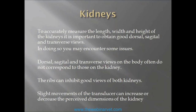Obtaining the width and height of the kidneys requires good dorsal, sagittal, and transverse views. The problem is that the dorsal, sagittal, and transverse views on the body do not often correspond to those on the kidneys. The ribs can inhibit good views of both kidneys, and very slight movements and rotations of the transducer can increase or decrease the perceived dimensions. So not only is there wide normal variation in kidney size, but a lot comes down to your accuracy in examining the kidneys — getting the genuine length without overestimating or underestimating.